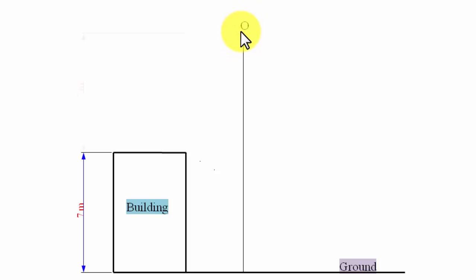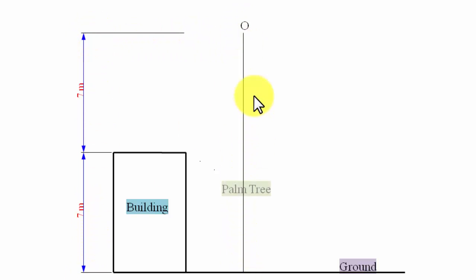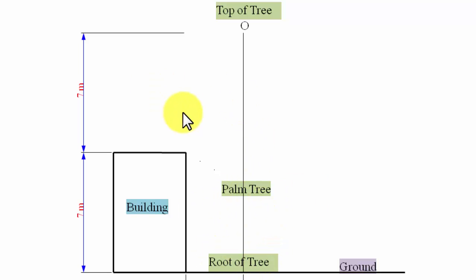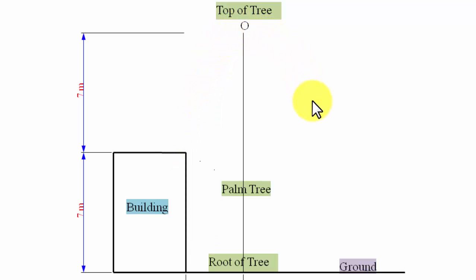Here is the topmost part of the tree, and this palm tree is actually 14 meters high. So this is the top of the tree and this over here is the root of the tree, and this lies at a distance of 3.5 meters from the building. There is some guy standing over here trying to throw a ball which just manages to hit the top of the tree and then come back to the ground.